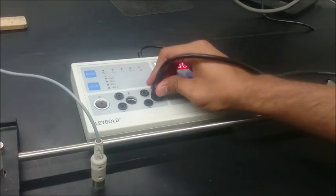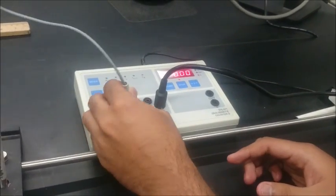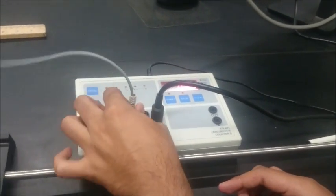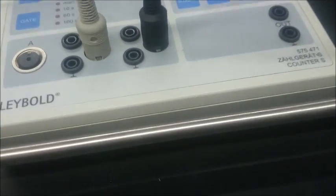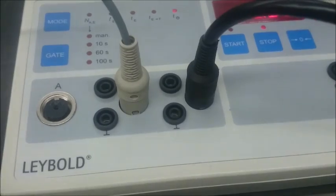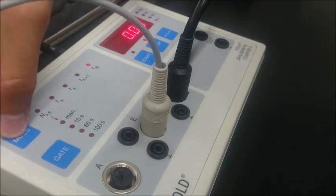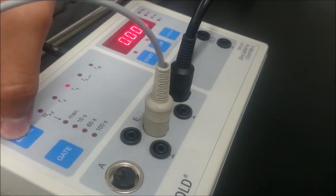Connect the key switch to port E of the counter. Connect the light barrier to port F. Select the mode TE2F.